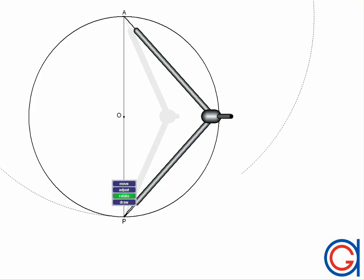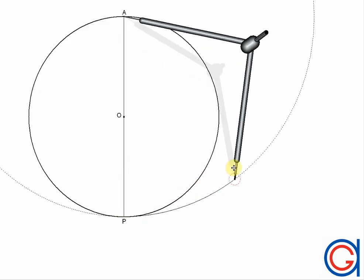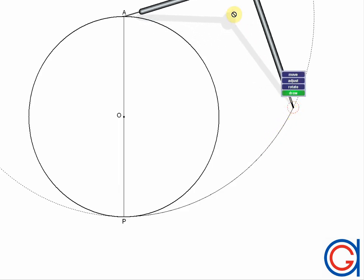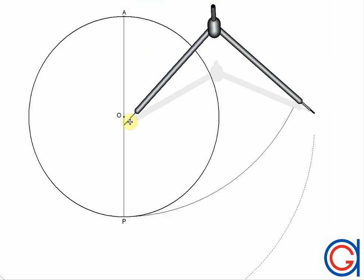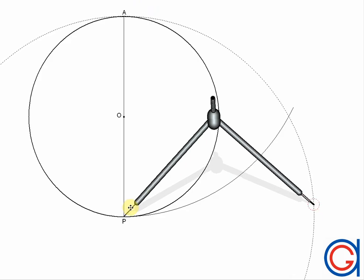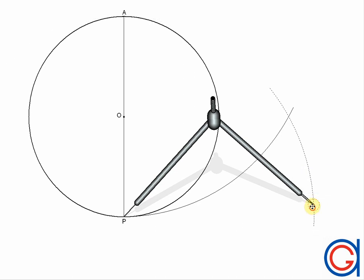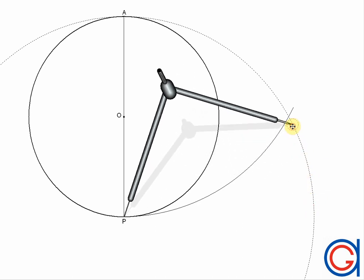Now, with your compass centred on point A as shown, scribe an arc to the right. Then repeat this process, but this time use point P to centre your compass and scribe an arc to the left, which intersects the previous arc as shown in the video. Where these arcs intersect, we will call this point Q.